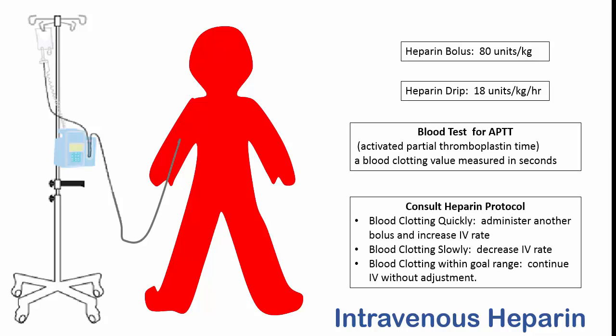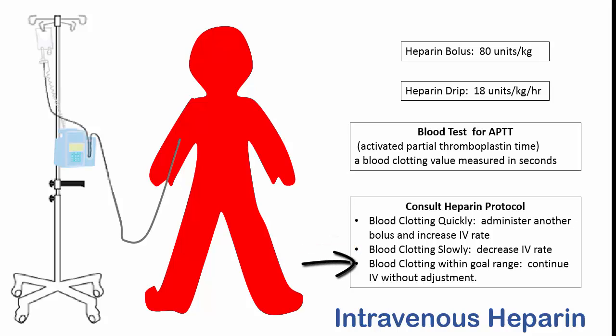A protocol is a pre-printed set of guidelines. If we find that the blood is clotting quickly, we may need to administer another bolus, or we may need to increase the IV rate, or both. If the blood is clotting too slowly, we may need to decrease the IV rate — and our patient may be at risk for hemorrhage. If the APTT level is within the goal range, we'll know that we have gotten the administration of heparin exactly right for this patient, and so we'll continue the IV without adjustment.